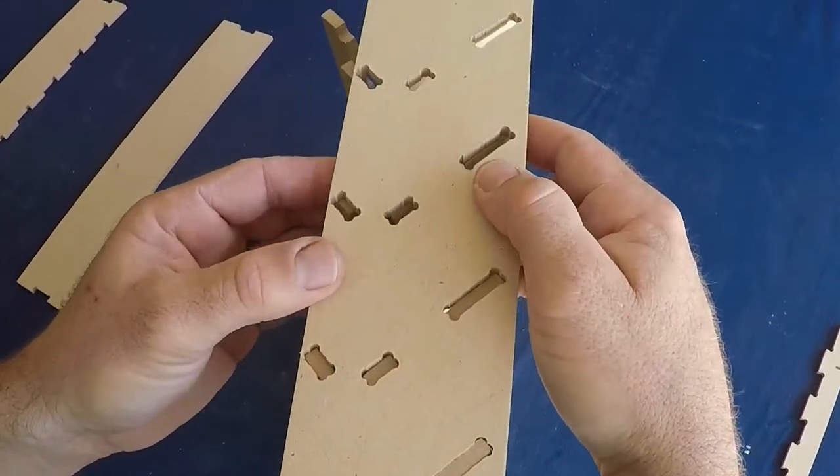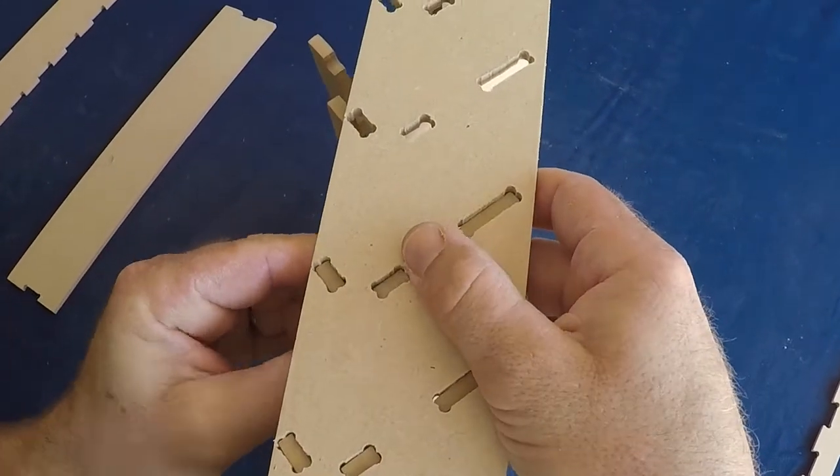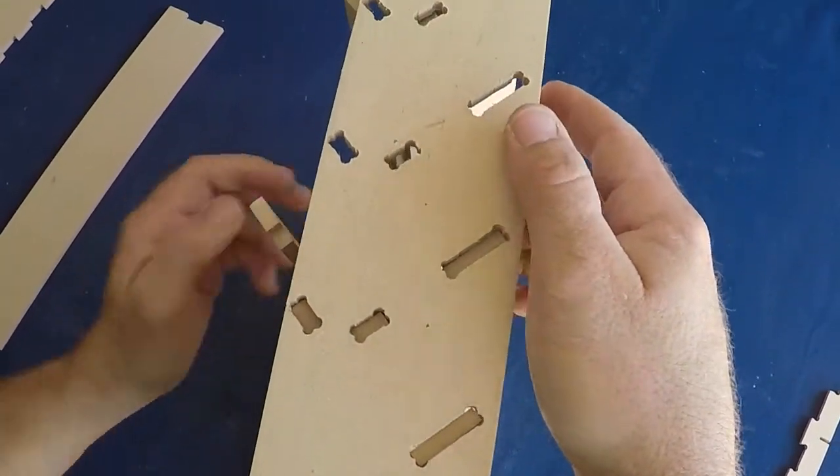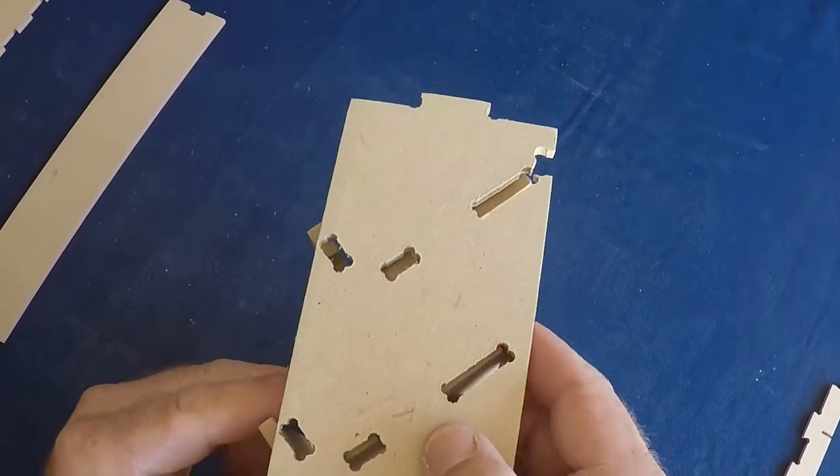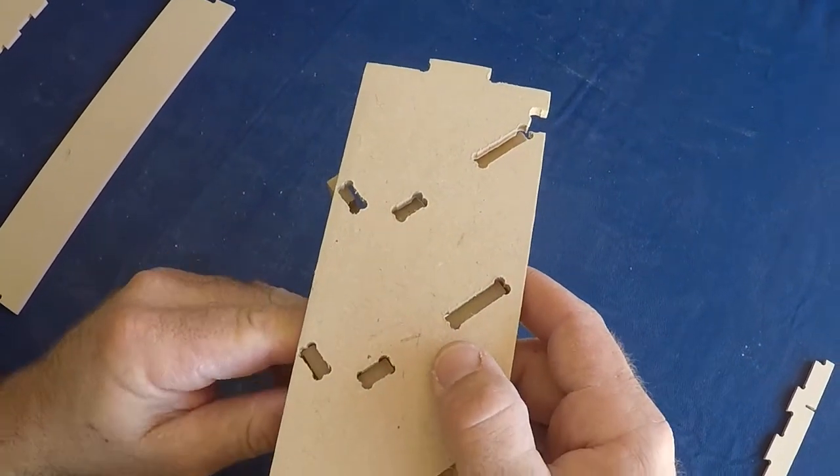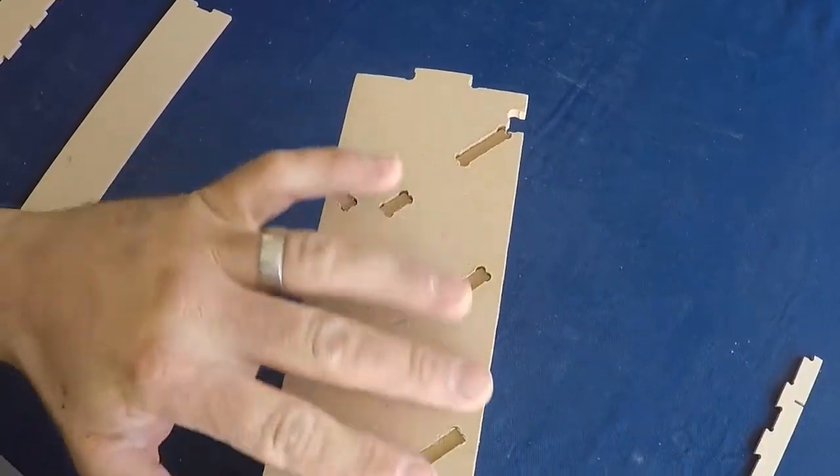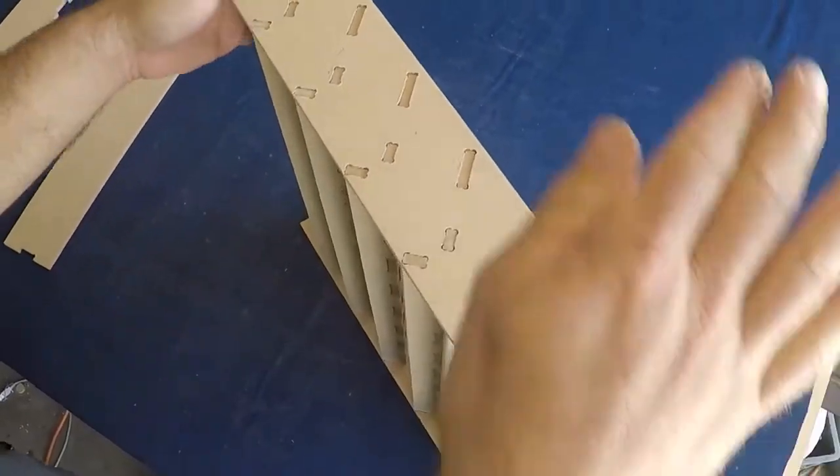Working up to each shelf sequentially making sure that the tabs are lined up correctly in the slots. Once all the tabs are lined up correctly just give it a tap to seat them all completely.